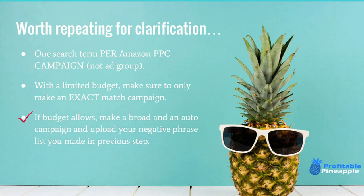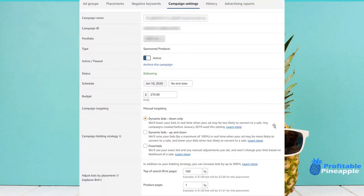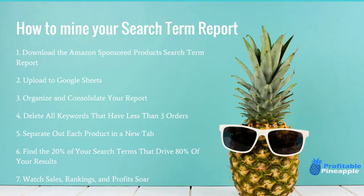What do you do with the search terms that are driving 80% of your sales? I want you to put each search term into its own separate campaign — single keyword ad campaigns. One search term per Amazon PPC campaign, not ad group. If you have a limited budget, make sure you're only starting with exact match campaigns. If your budget allows, then make a broad and auto campaign and upload your negative phrase list. This way you can customize every single part of the campaign — the budget, the bidding strategy, the adjust bids by placement — all based on this one search term.